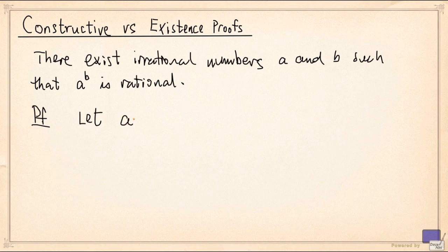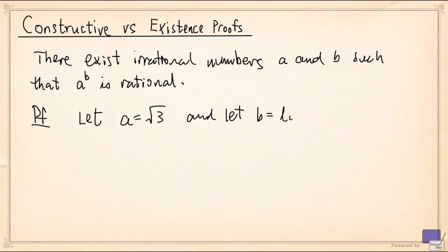So we're going to let a = √3 and let b = log₃(4). Now a is irrational because it's the square root of a prime number. But what about this?